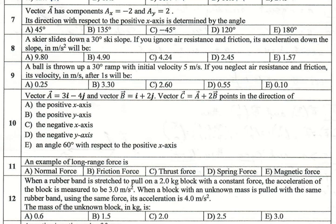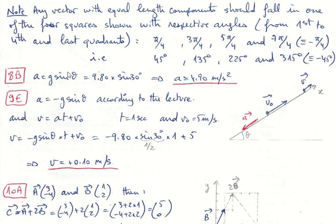إذن مراجعة المحاضرة: على سطح مائل، التسارع يساوي ثابت ويساوي G sine theta. إذن يساوي G مضروب في sine 30، وsine 30 يساوي النص (0.5). إذن يساوي عدديا 4.90 متر بالثانية تربيع.